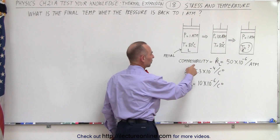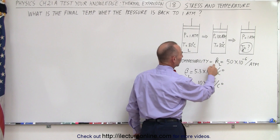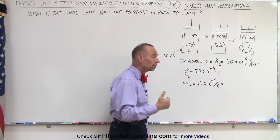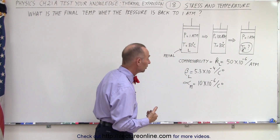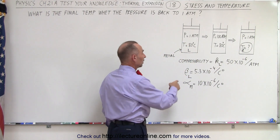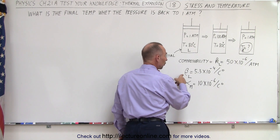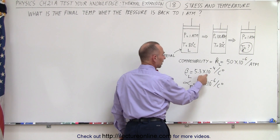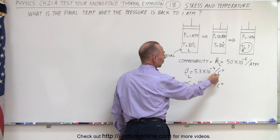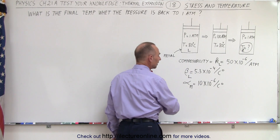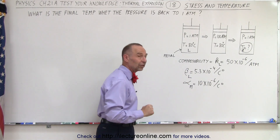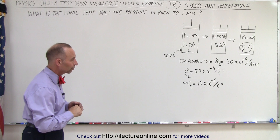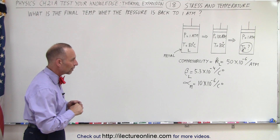We're told that the compressibility of the liquid, K sub L, is 50 times 10 to the minus 6 per atmosphere. The volume coefficient of expansion is 5.3 times 10 to the minus 4 per centigrade degree for the liquid, and the linear coefficient of expansion for the metal is 10 times 10 to the minus 6 per centigrade degree.